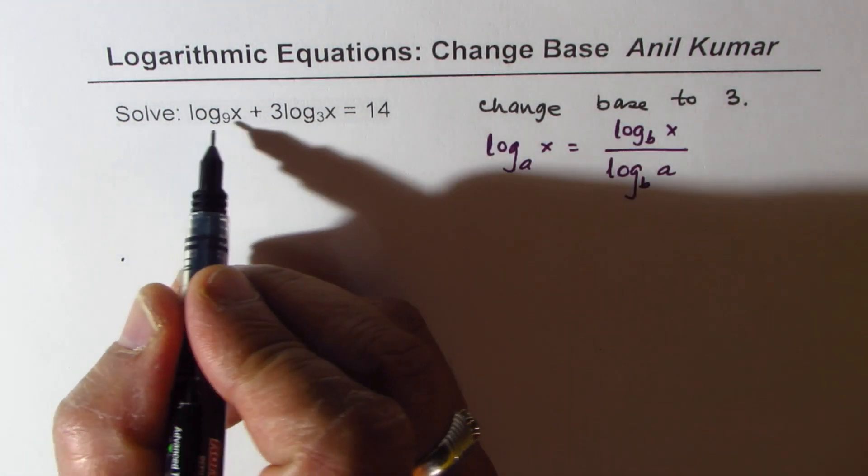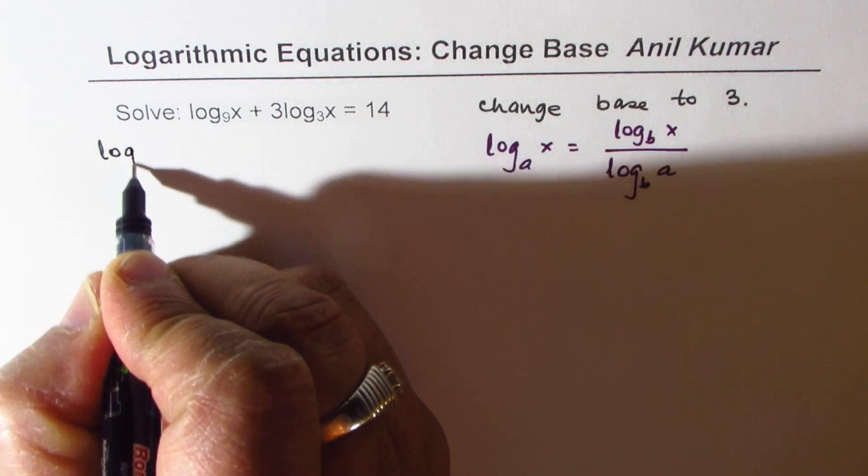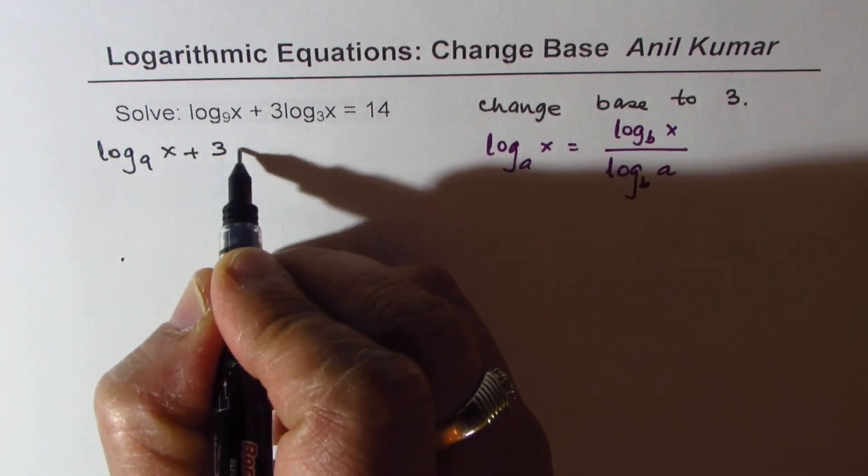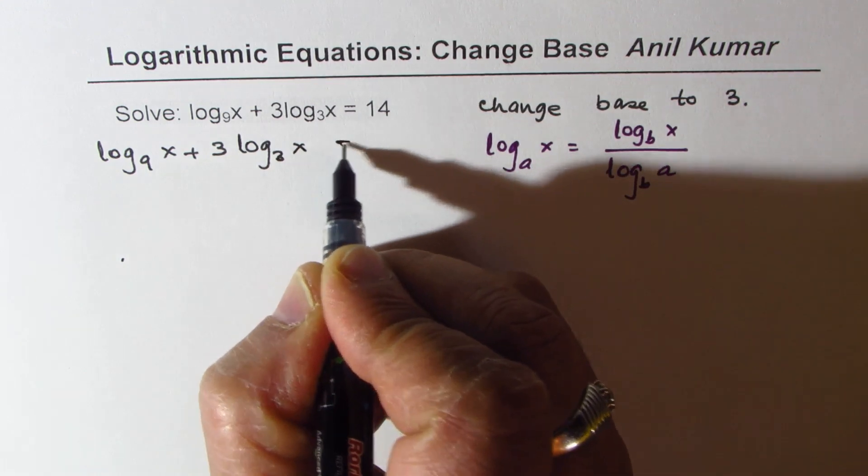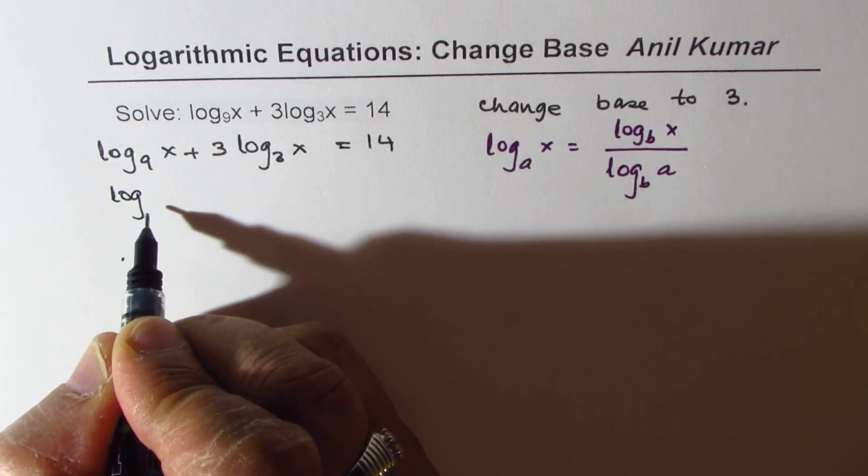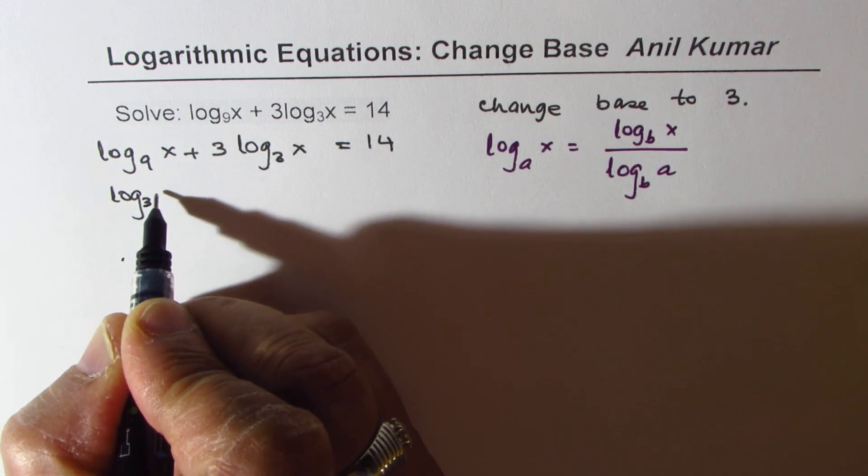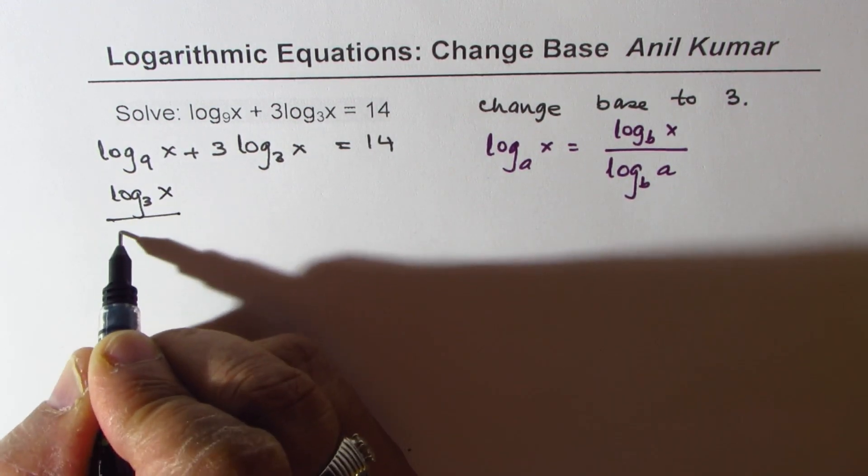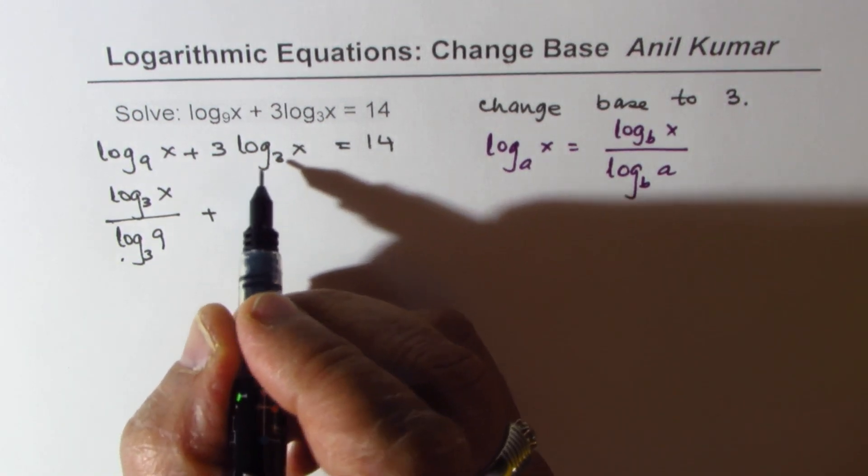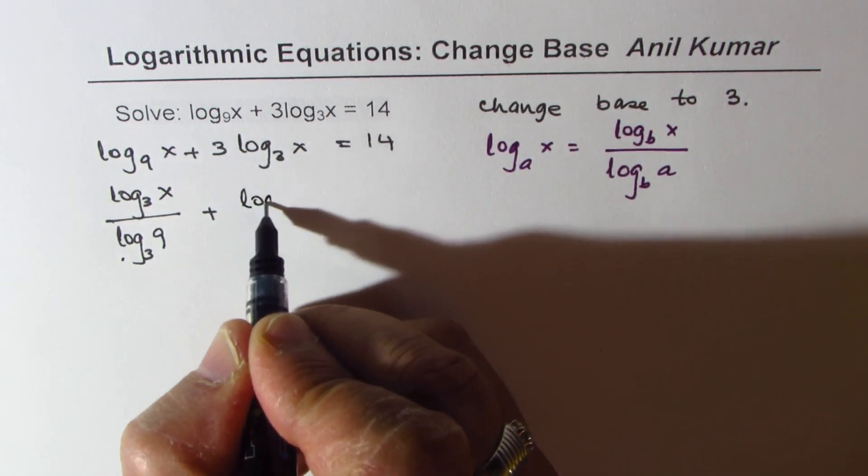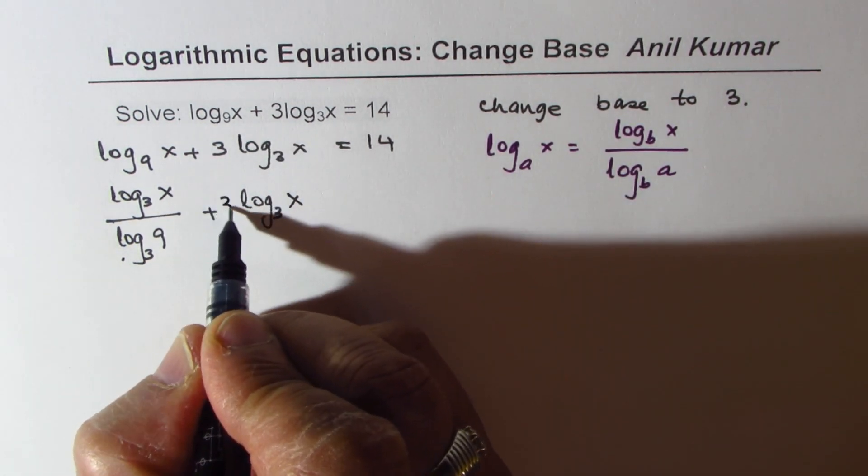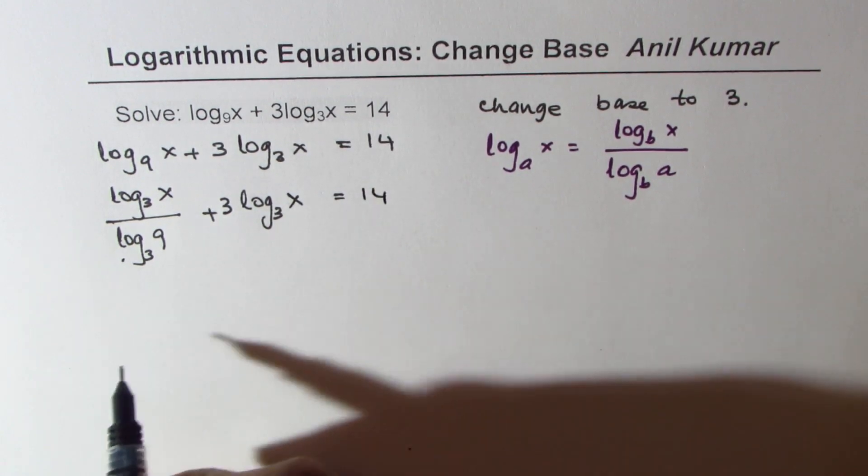Let me rewrite the question first: log_9(x) + 3 log_3(x) = 14. This could be written as log base 3 of x divided by log base 3 of 9, plus log base 3 of x equals 14.